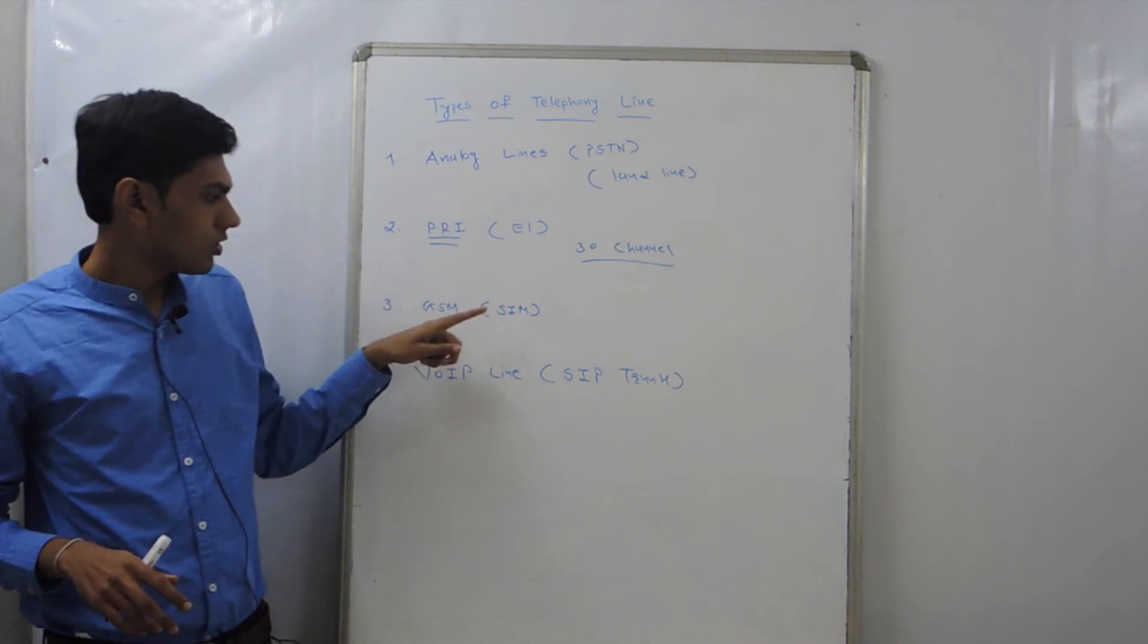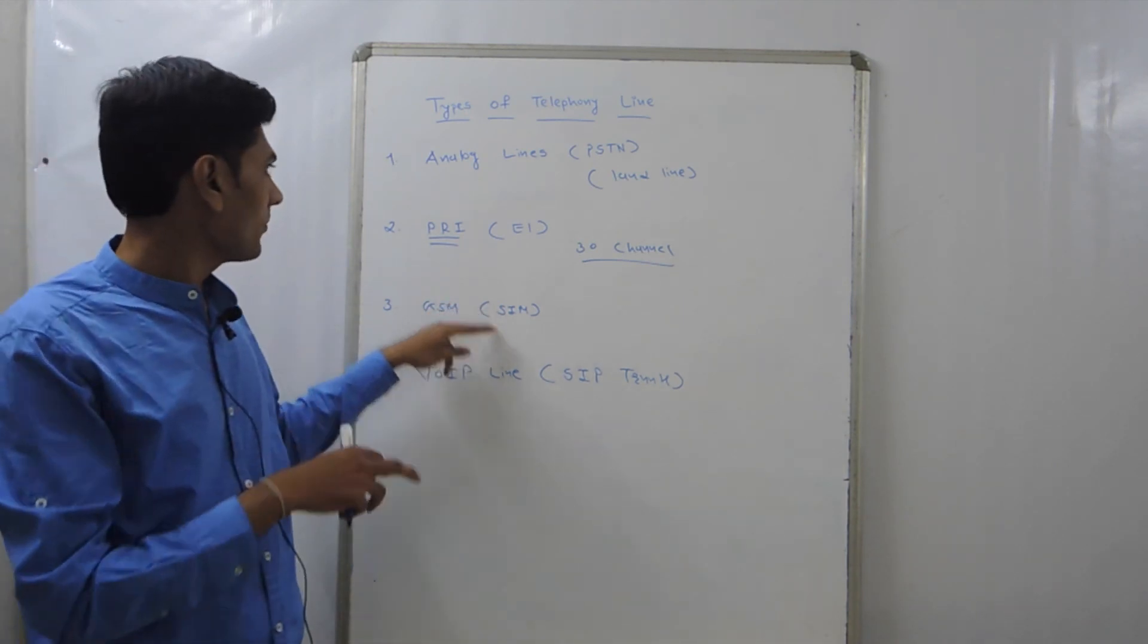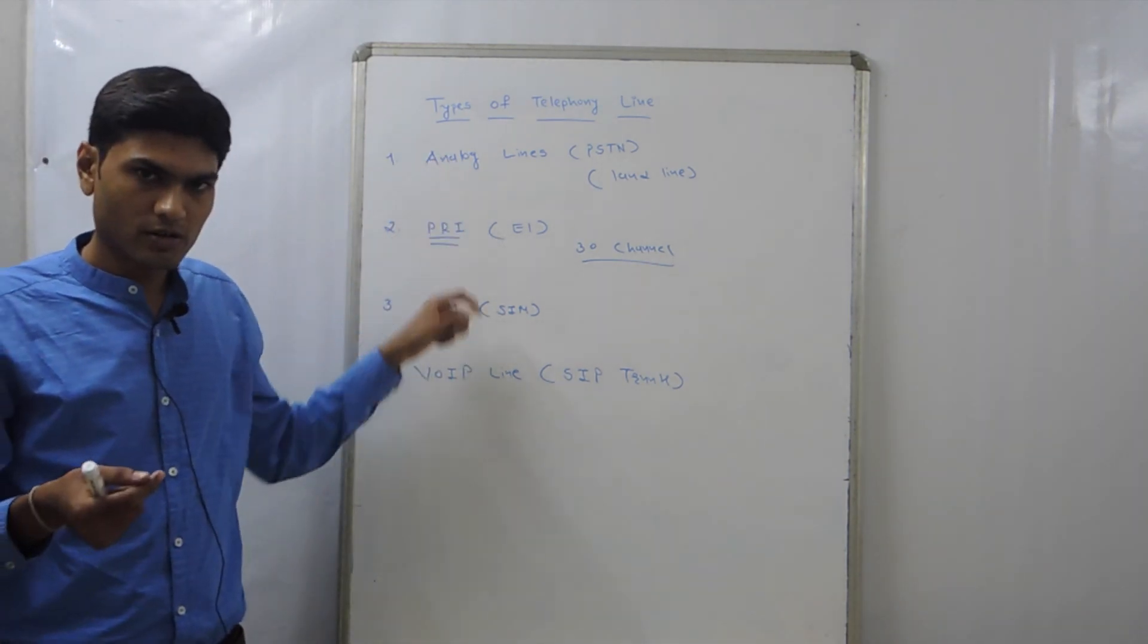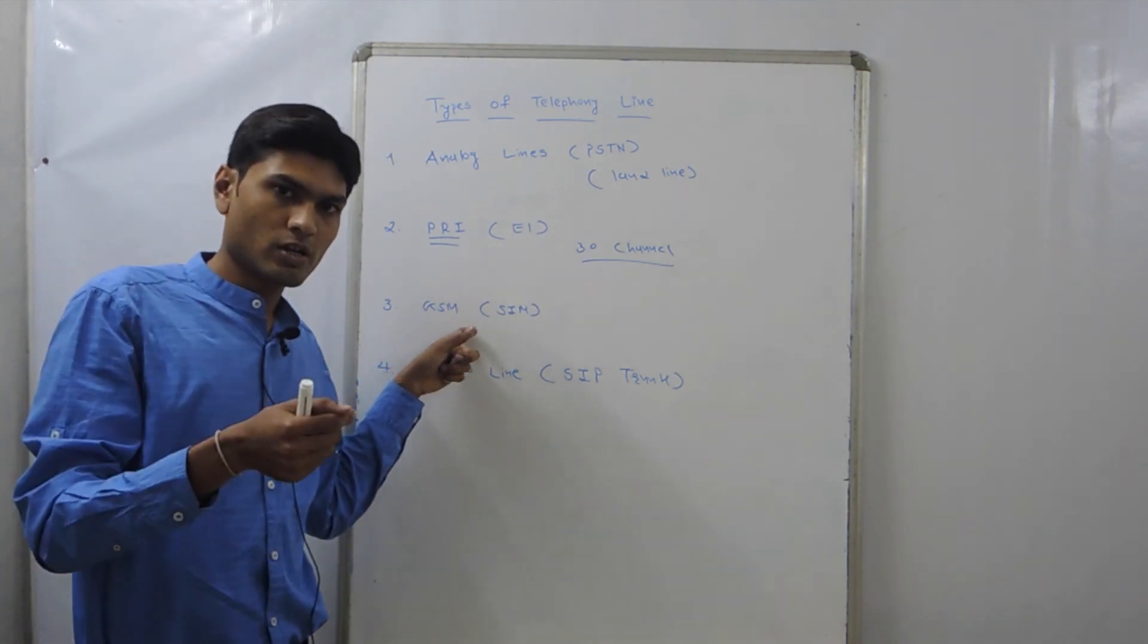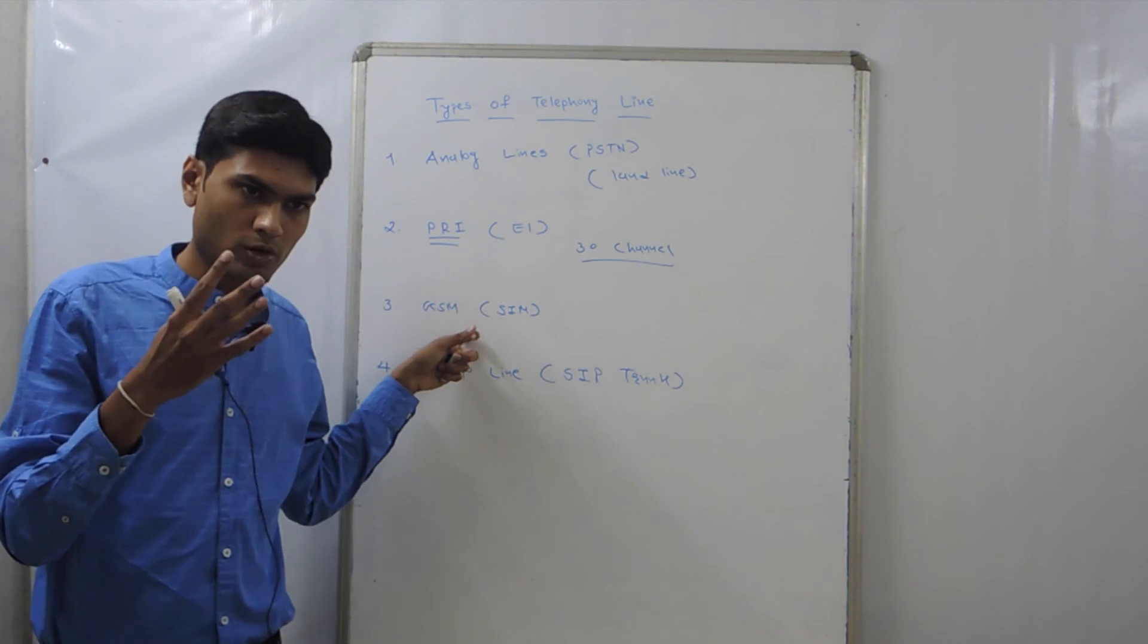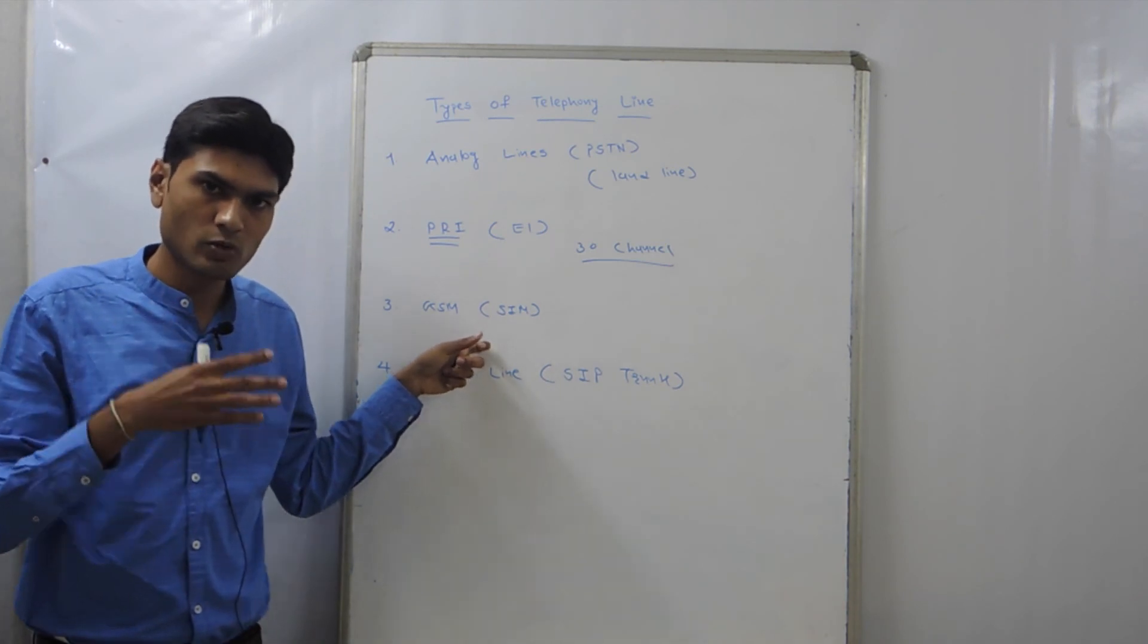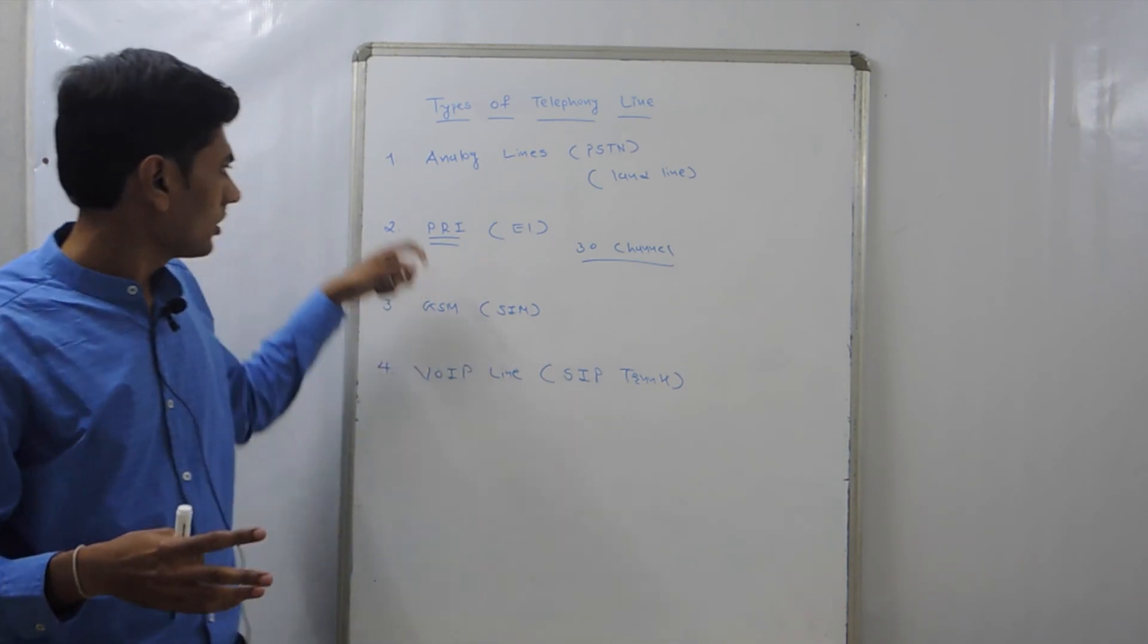Third one is the GSM or SIM. The same way it's like analog line, but you need to connect this GSM into a GSM gateway. So if you have four GSM SIMs, then you can make four simultaneous calls.